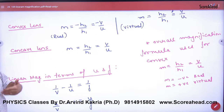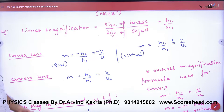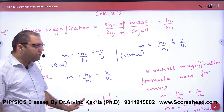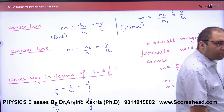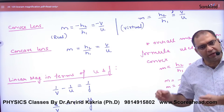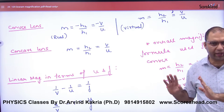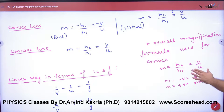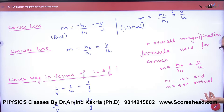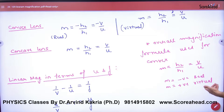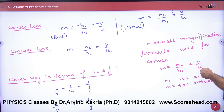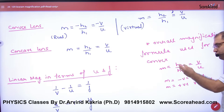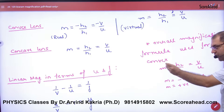So when we use numericals, we don't need confusion about which is negative and which is positive. We simply use the magnification formula m = v/u without worrying about the sign convention separately. We will apply sign convention directly in the numericals. We put sign convention in the theory to understand it, but in numericals we use the formula directly — m equals h2 by h1, which is the same as v by u.